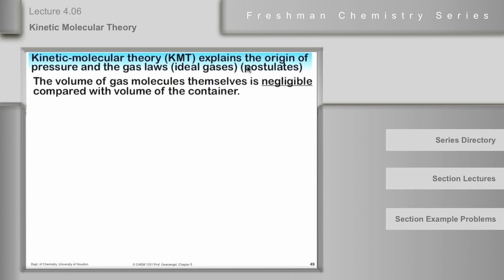The postulates of the kinetic molecular theory have been around a very long time — they're even older than I am — and their effects are exceedingly well known. The first postulate is that gas molecules themselves are incredibly tiny, being made up of atoms, molecules, and so forth. They are tiny compared to the volume of the container. The aggregate volume of all the molecules would be completely negligible compared to the volume occupied by the gas, which is the volume of the container it's in.